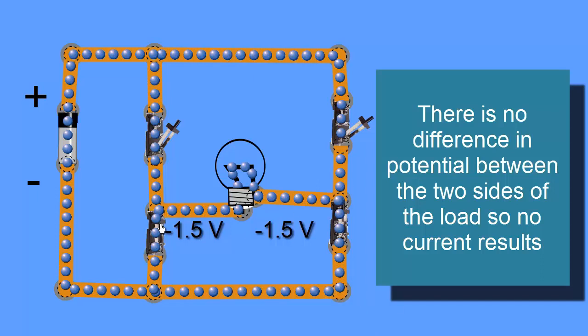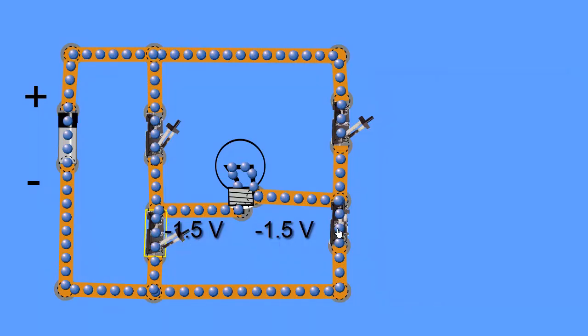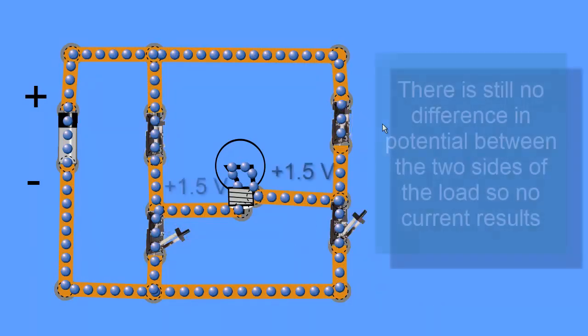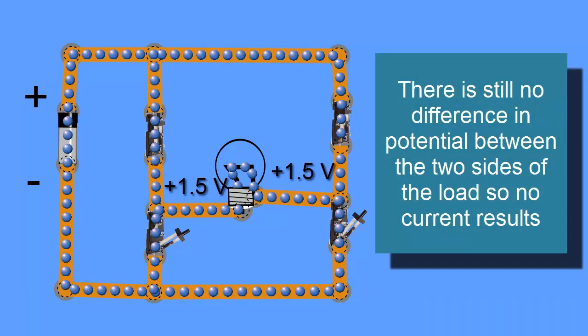We can do the same thing for the top, and we'll get the same behavior. Close these two, same behavior, nothing happens. We've hooked the positive terminal of the battery to one side of the load, and the positive terminal of the battery to the other side of the load, so we don't get any current flow.